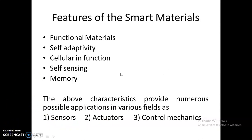Smartness of the material may be described by some characteristics. For example: functional materials, self-adaptivity, cellular in function, self-sensing, and memory of the material.